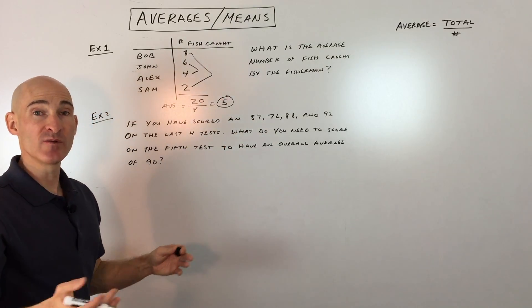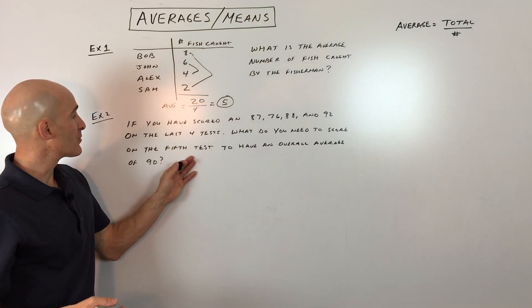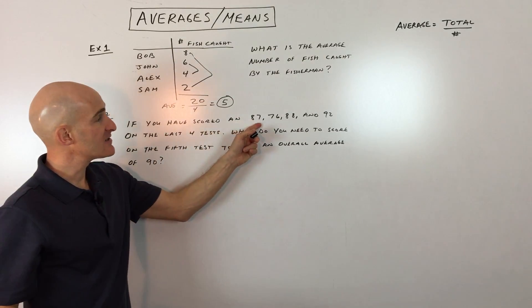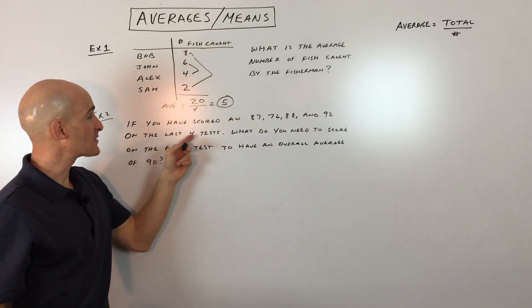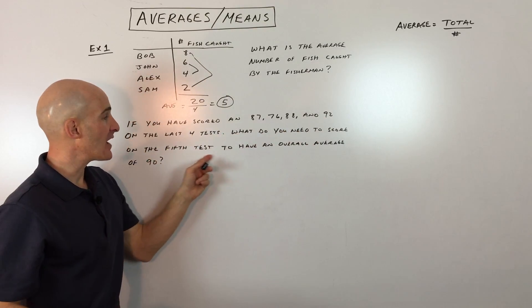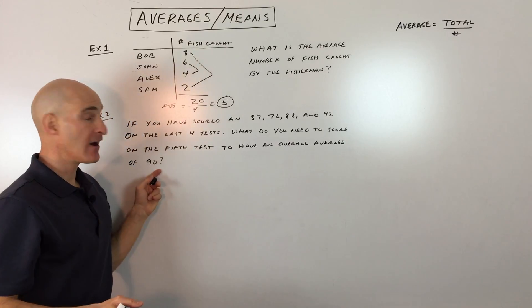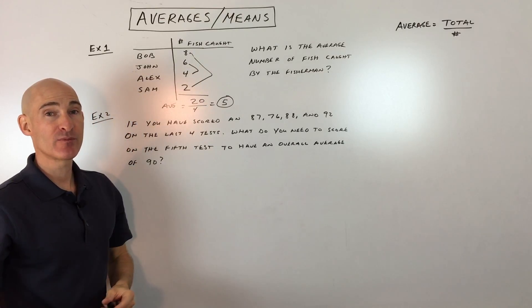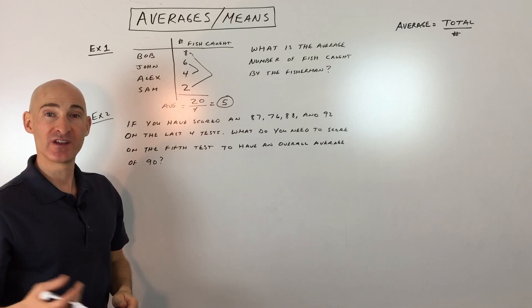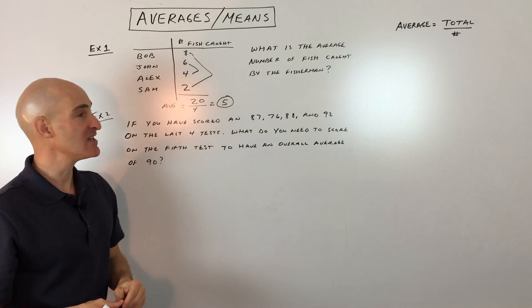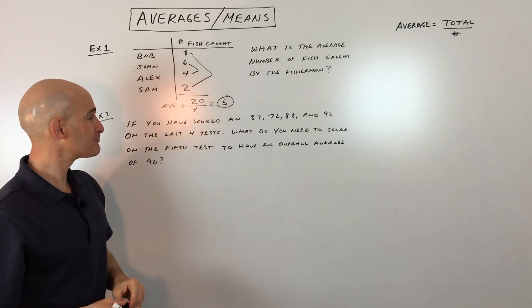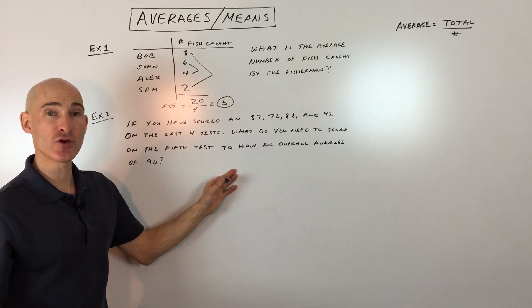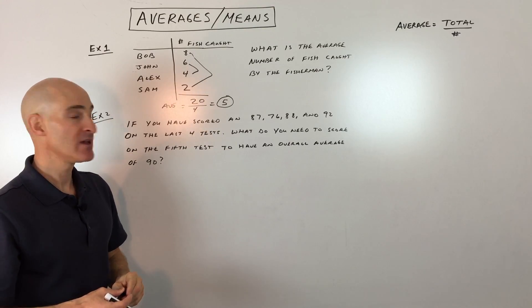Now that one was pretty easy. Let's do a little bit more challenging one. Example number two says, if you have scored an 87, 76, 88, and 92 on the last four tests, what do you need to score on the fifth test to have an overall average of 90? Okay. Now this is a pretty popular question, both in your class, as well as on the ACT. People are wondering, what do I need to do to get up to that A minus range, right? So go ahead and see if you can solve this on your own and we'll come back together and do it together.